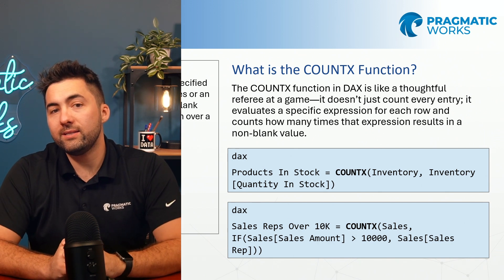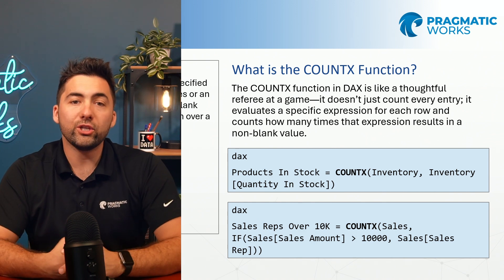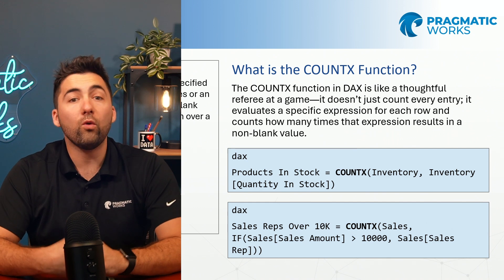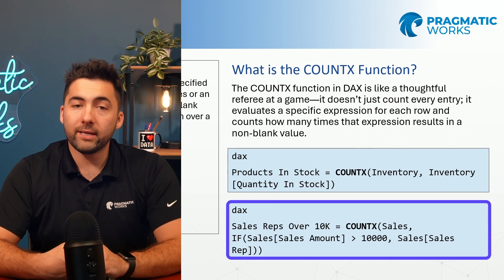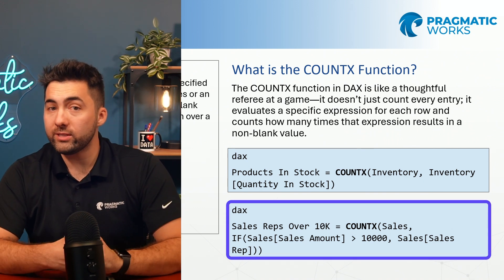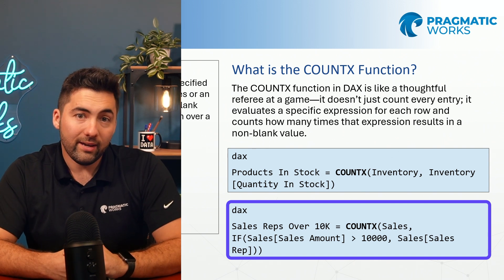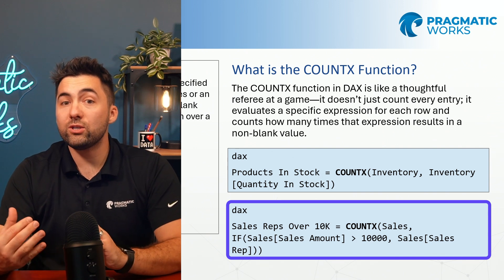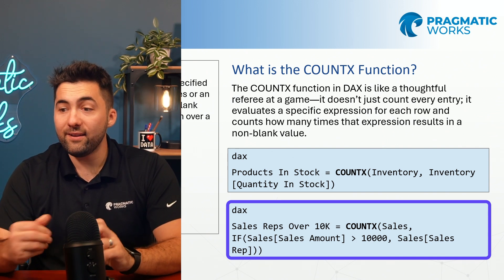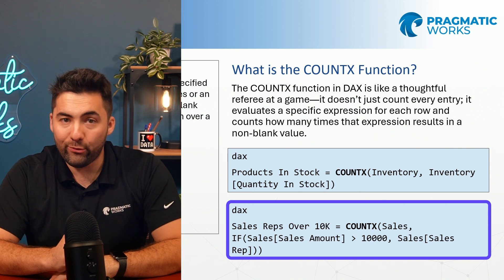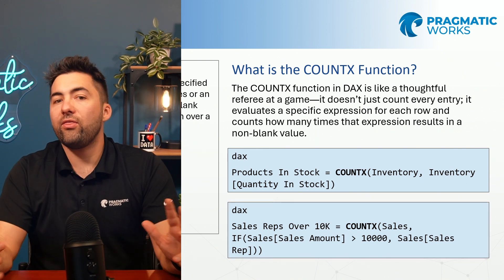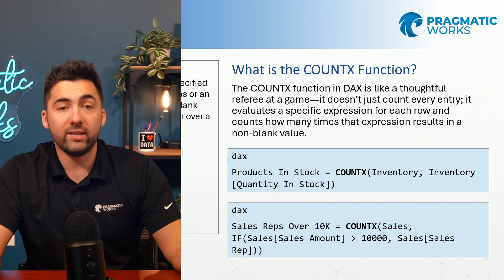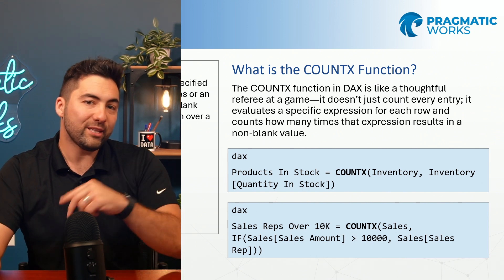One way to think about this is a calculation of the sales that had accrued that were over $10,000. I could use COUNTX on the sales table with an IF statement — if the sales amount is over $10,000, go ahead and give me the count. So instead of 1,000 sales generally, maybe I only had about 250 that were above $10,000. Let's build it together.